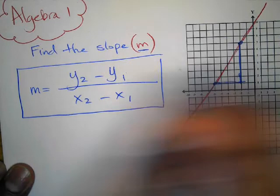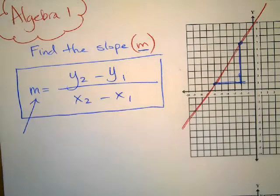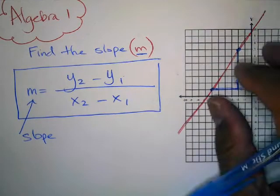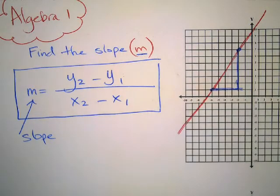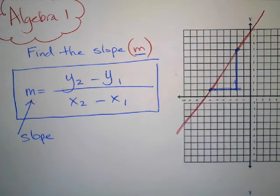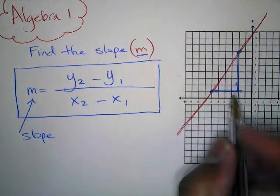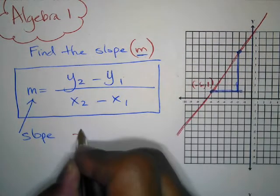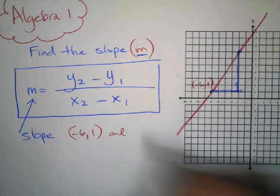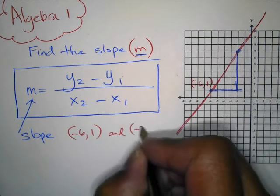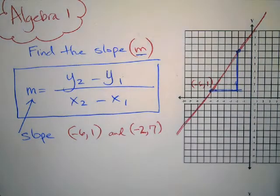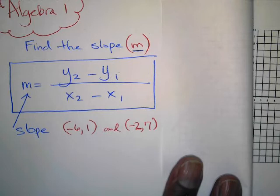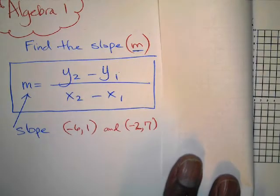Remember, slope used the letter M, and that was the formula. In this situation, without the graph, X1, X2, Y1, and Y2 came from the coordinates of the two points. So let's say they give you the point negative 6, 1 and the point negative 2, 7. Find the slope — you just substitute those points into the formula.